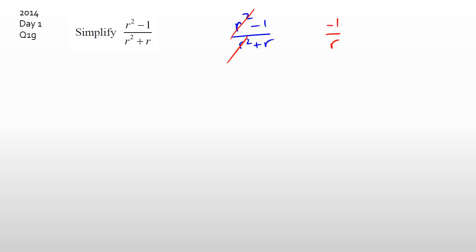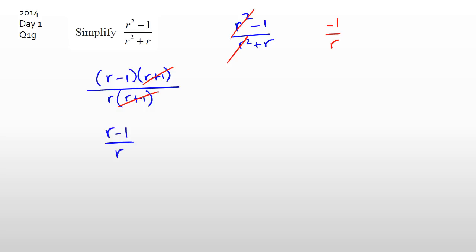But that is not what I was looking for. What you actually need to do is factorize. You've got to factorize the numerator, which gives you r minus 1 times r plus 1. And the denominator, you factorize to get r times r plus 1. From this point you cancel out the r plus 1 from both top and bottom. Your final answer is r minus 1 over r.